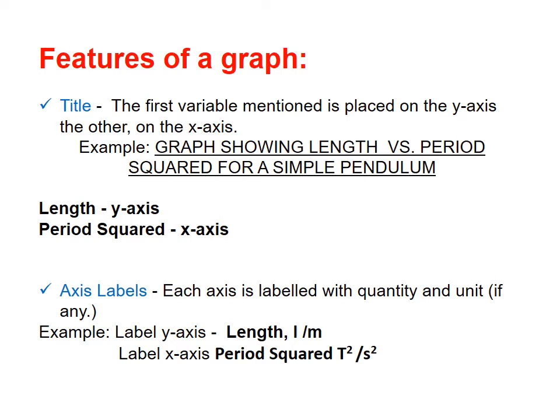For example, graph showing length versus period squared for a simple pendulum. It means that length would be the variable on the y-axis and period squared would be the variable on the x-axis.